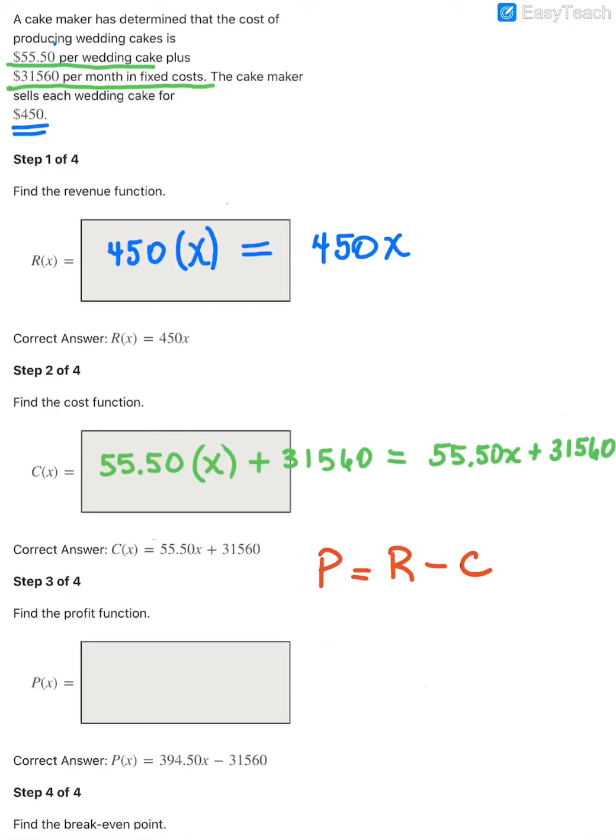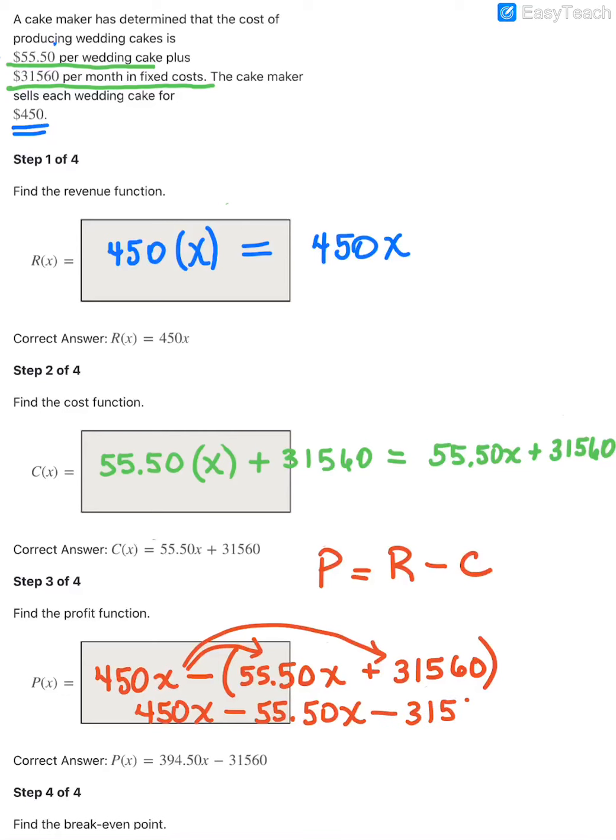In this case, my revenue function was the $450 per wedding cake times x number of wedding cakes. And then we are subtracting our cost of $55.50 per wedding cake, which is x, plus the fixed cost of $31,560. Now you'll notice I put that in parentheses. The reason I did that is because you have to subtract both types of costs. If you don't put the parentheses, you might forget to distribute that minus sign to both terms. When I go to simplify this, I've got 450x that becomes minus 55.50 times x and then also minus the $31,560.